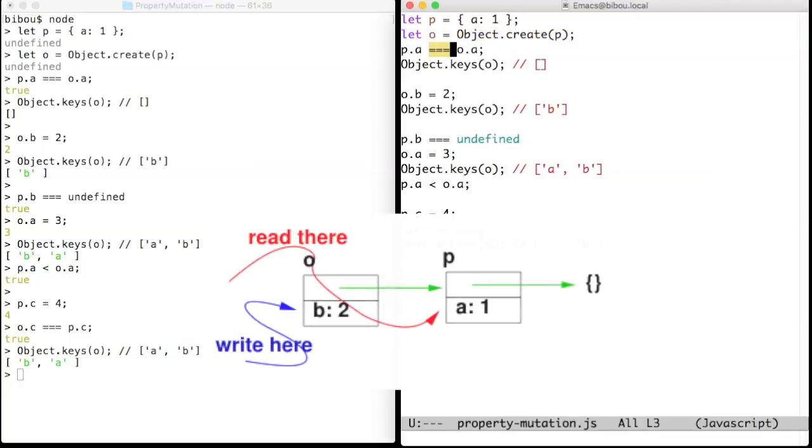The expression O dot B creates a property B in O. This is a proper property of O, as shown with object keys, that lists the proper keys of an object - that is, the keys held by the object itself, not the keys inherited from the prototype.